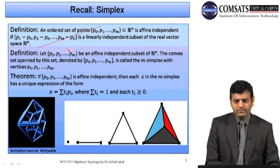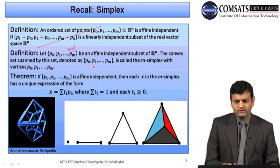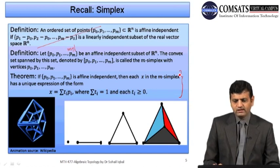If we have m+1 affinely independent points, then the convex set spanned by this set is called the m-simplex with vertices p_0, p_1, …, p_m. The convex set spanned by these points is the smallest convex set containing them. We have a theorem which greatly simplifies this: you just take the combination t_i · p_i, where p_i are the spanning points.